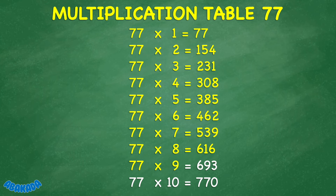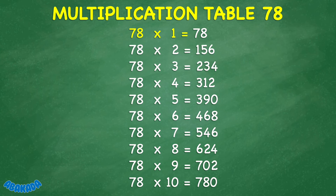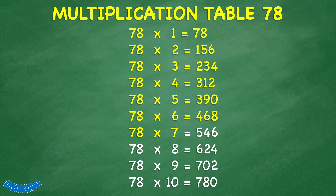77 times 9 equals 693. 77 times 10 equals 770. 78 times 1 equals 78. 78 times 2 equals 156. 78 times 3 equals 234. 78 times 4 equals 312. 78 times 5 equals 390. 78 times 6 equals 468. 78 times 7 equals 546. 78 times 8 equals 624. 78 times 9 equals 702. 78 times 10 equals 780.